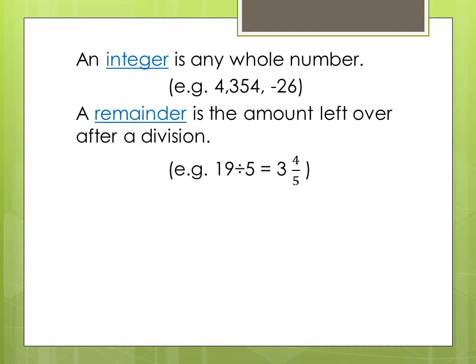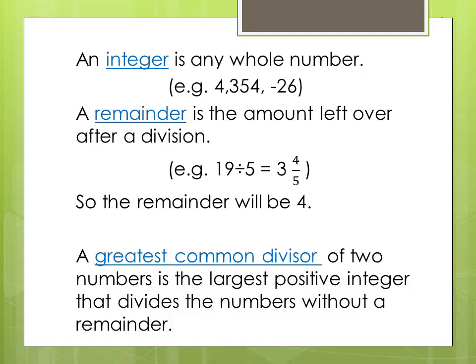For example, 19 divided by 5 will produce 3 and 4 fifths. So in this example the remainder will be 4. Thus the greatest common divisor of two numbers is the largest positive integer that divides the numbers without a remainder.